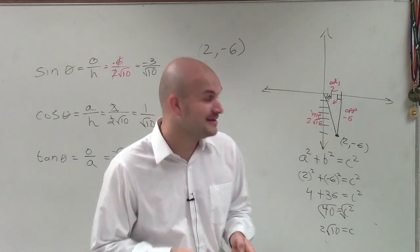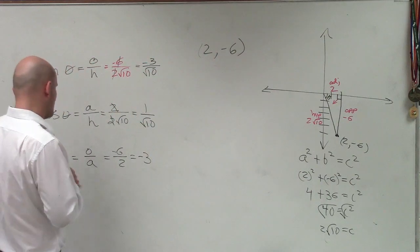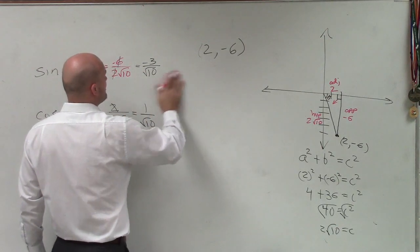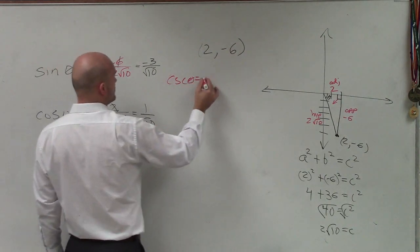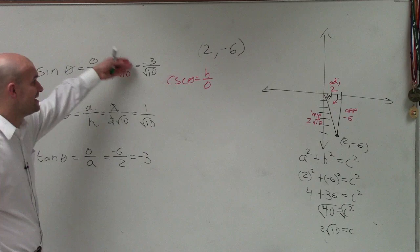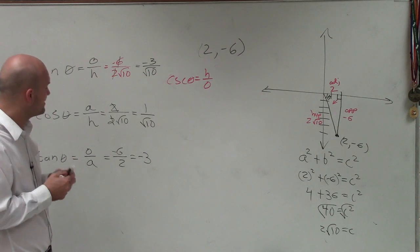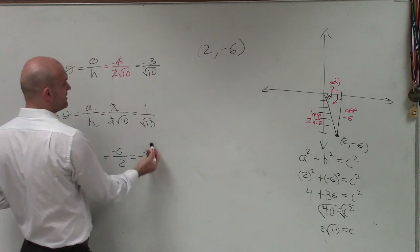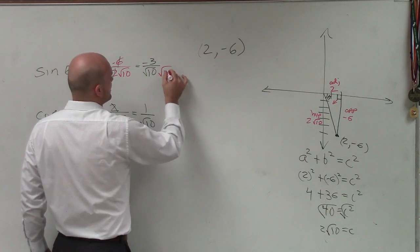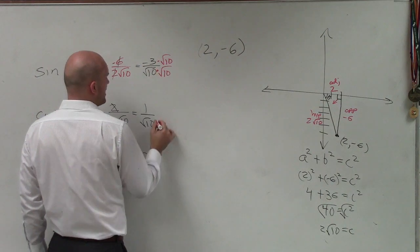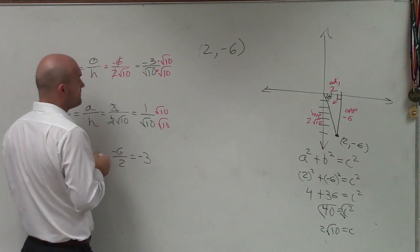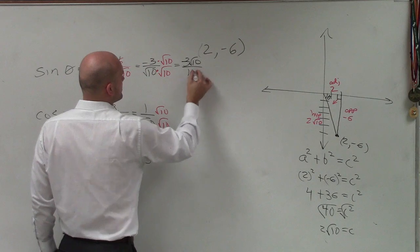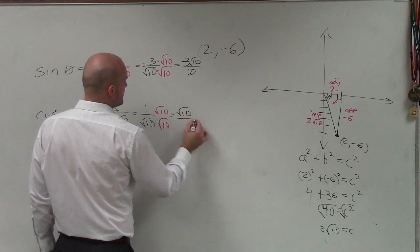Now we need to look at the reciprocal functions. But first — I forgot one last step — we simplified but we did not rationalize our radicals. We don't want to leave the square root of 10 in the denominator, so we need to rationalize the denominator. I'm going to multiply by square root of 10 on the top and bottom. So the final answer for sine is negative 3 square root of 10 over 10, and for cosine it's square root of 10 over 10.